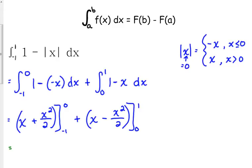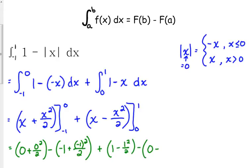Our fundamental theorem of calculus says we plug in the upper limit first. So we've got zero plus zero squared over two, minus we plug in the lower limit: negative one plus, be careful with squaring negative numbers, negative one squared over two. Plus, plugging into the second one, top one goes first: one minus one squared over two, minus what we get when we plug in zero, which is zero.